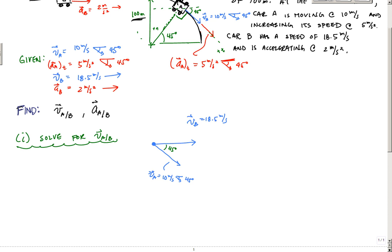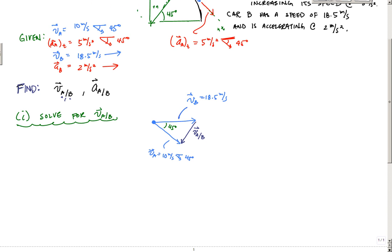Now I want to complete the vector equation. The relative velocity of A with respect to B — VAB — goes from B to A and is what we're solving for. Since I know the magnitudes of VA and VB, I can use the law of cosines: C² = A² + B² − 2AB·cos(θ). In my case, |VAB|² = VA² + VB² − 2·VA·VB·cos(45°).